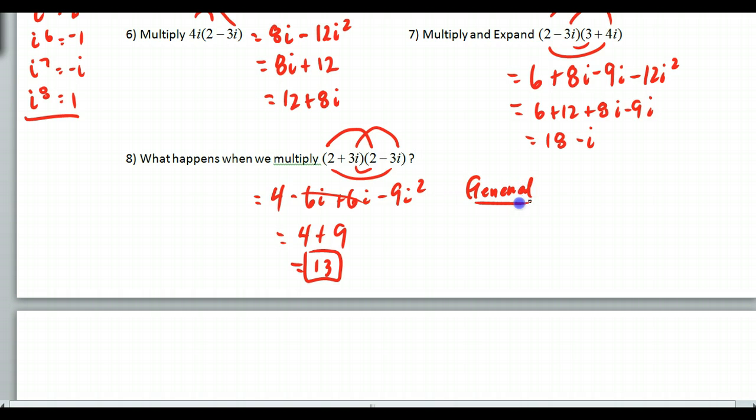If I multiply a plus bi and a minus bi, what's going to happen is that I'm going to get the first term squared. Remember, the middle terms will drop out. And it's going to be minus bi squared. What's that? Correct. Plus b squared.